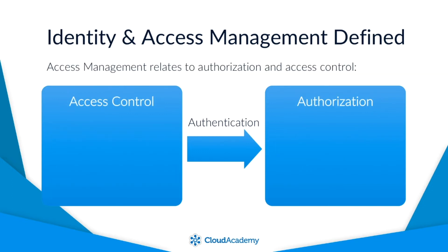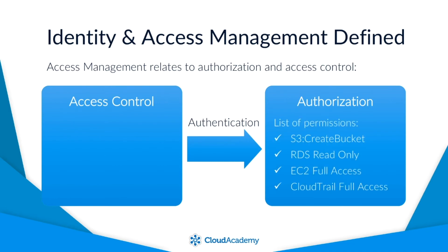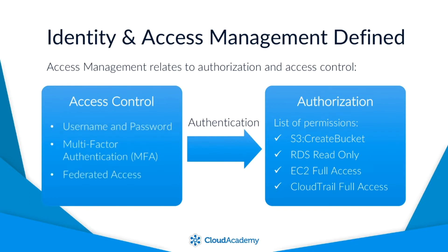The second part, access management, relates to authorization and access control. Authorization determines what an identity can access within your AWS account once it has been authenticated to it. An example of this authorization would be the identity's list of permissions to access specific AWS resources. Access control can be classed as a mechanism of accessing a secured resource, for example username and password, multi-factor authentication, or federated access.